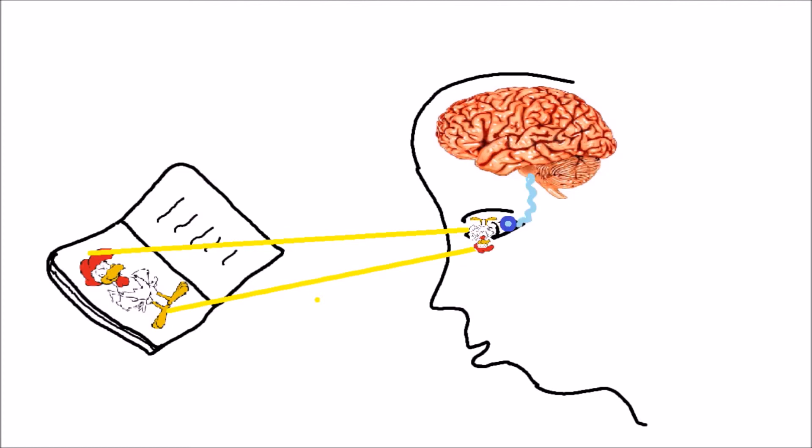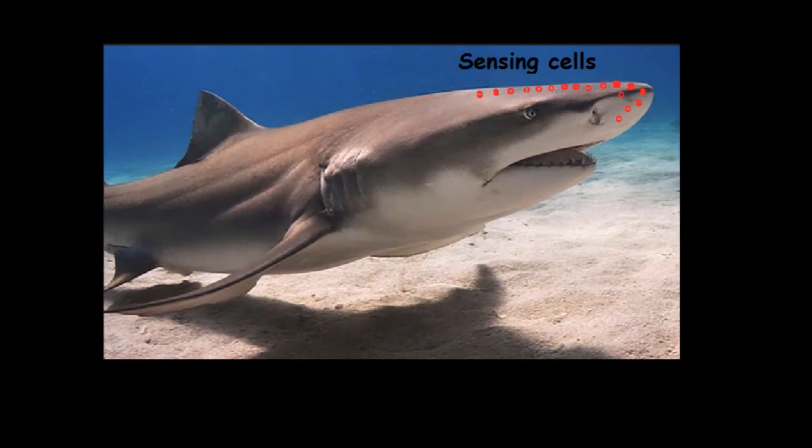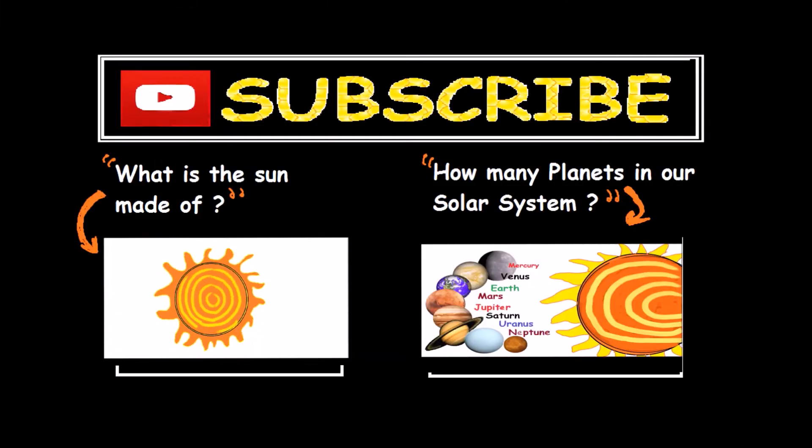Their signals are changed into images we can see. Sharks have special cells that can pick up tiny electrical signals to sense the world around them.